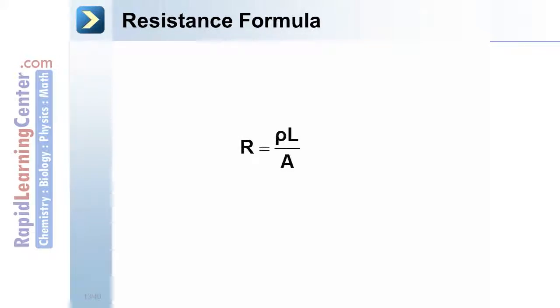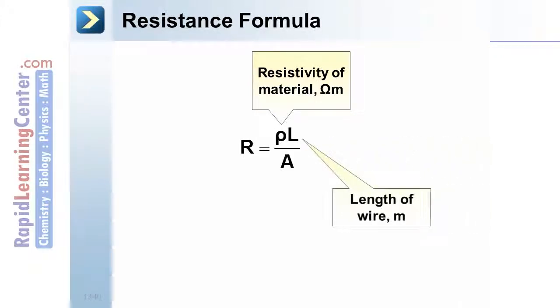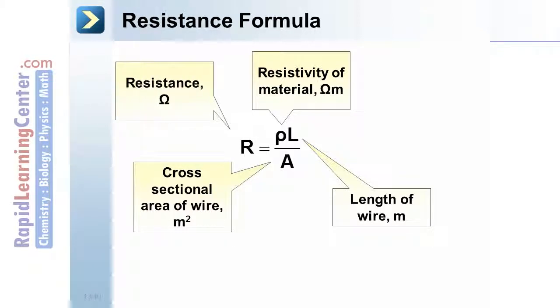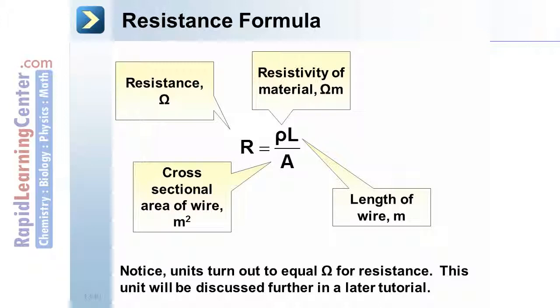Resistance formula. Resistance equals rho times L divided by A. Rho is the resistivity which was previously mentioned in ohm meters. L is the length of a wire in meters. A is the cross-sectional area of the wire, typically in meters squared. And R is our resistance, which is in units of ohms, which use the Greek letter omega as a symbol. This unit will be discussed more in a later tutorial.